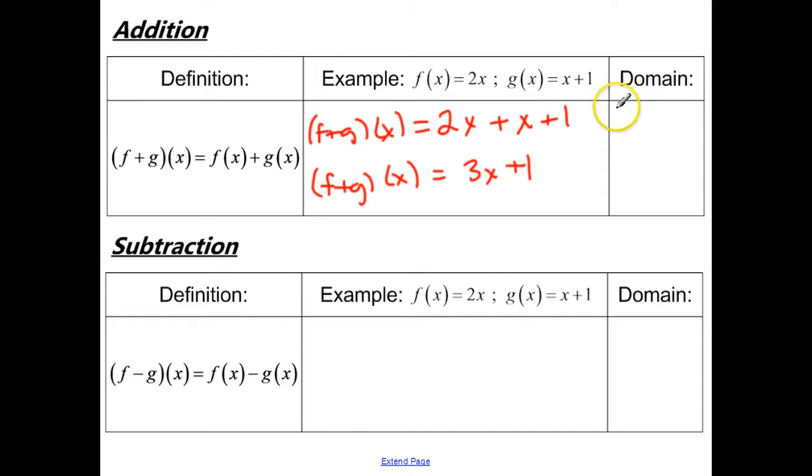Now for the domain, we want what's going to be common from both individual domains. In our case, f of x, the domain is all reals because you can plug any number in for x and this is still a function. And for g of x, it's also all real numbers, negative infinity to positive infinity, because you can put any number in for x and it'll still be a function. So in our case, we would have negative infinity to positive infinity for our domain.